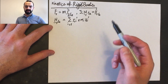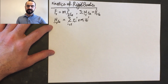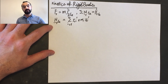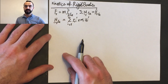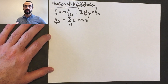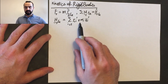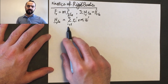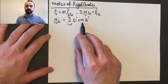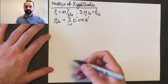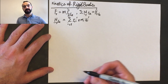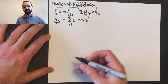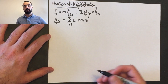Now, if you look at these relationships, my goal is to modify them such that they describe the kinetics of a rigid body. So we start with this and work toward that goal.